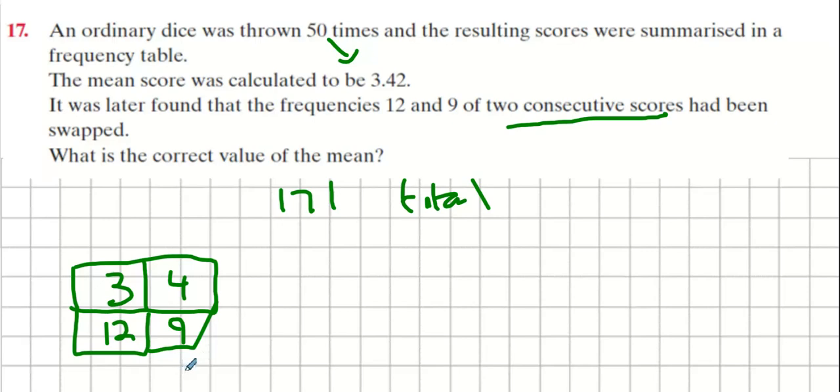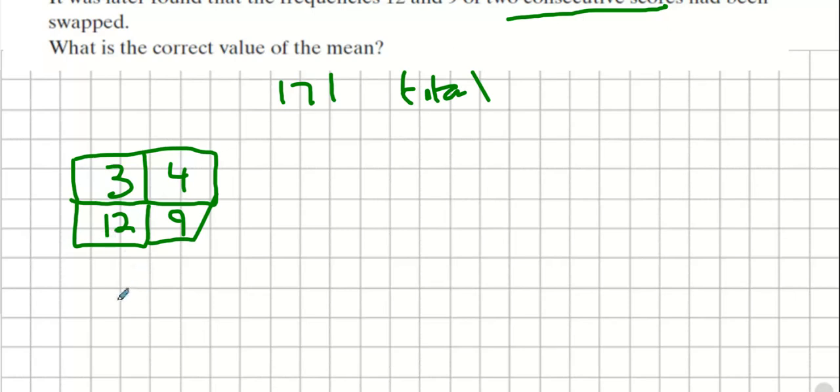There we see that 12 and 9, yeah. And what would be the answer if I was to multiply that out? That'd be 36 plus another 36, which would be 72. What happens if I swap them around?